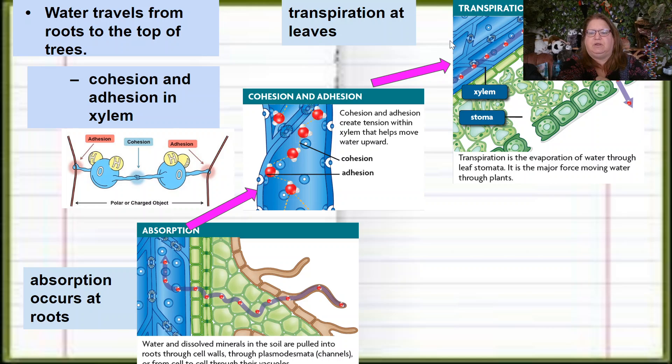Well, that's the transpiration. The transpiration is the evaporation of water, and it happens at the leaves and some of the stems but mainly at the leaves through these holes called stomata.